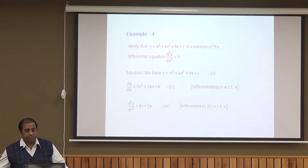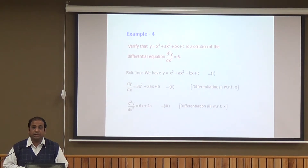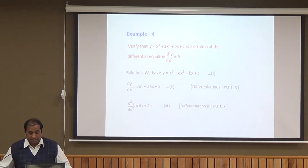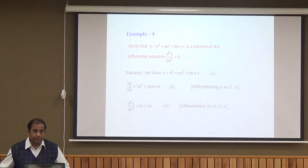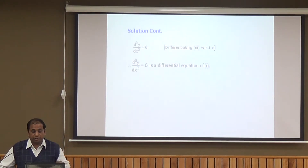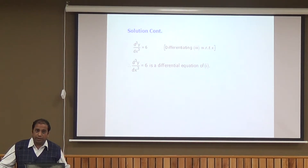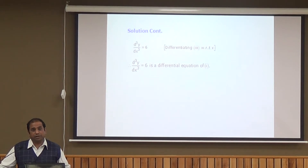Another example: verify that y = x³ + ax² + bx + c is the solution of d³y/dx³ = 6. We differentiate: dy/dx = 3x² + 2ax + b. Still two constants remain, so we differentiate again: d²y/dx² = 6x + 2a. Now only one arbitrary constant remains, so we differentiate once more: d³y/dx³ = 6, which is the required differential equation. This confirms it is the solution. The number of arbitrary constants tells us how many times to differentiate to obtain the differential equation.